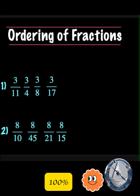How do we identify the big and small fraction? If two or more fractions have the same numerator, then the fraction with the larger denominator has the smallest value. Here, the numerator is 8, so 8 over 45 becomes the smallest fraction.